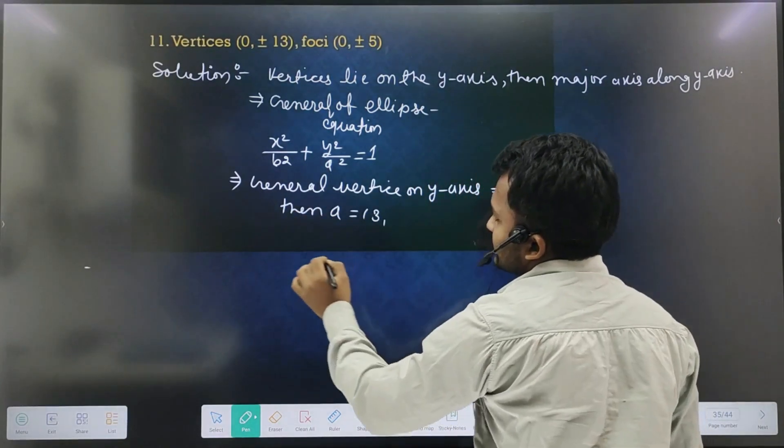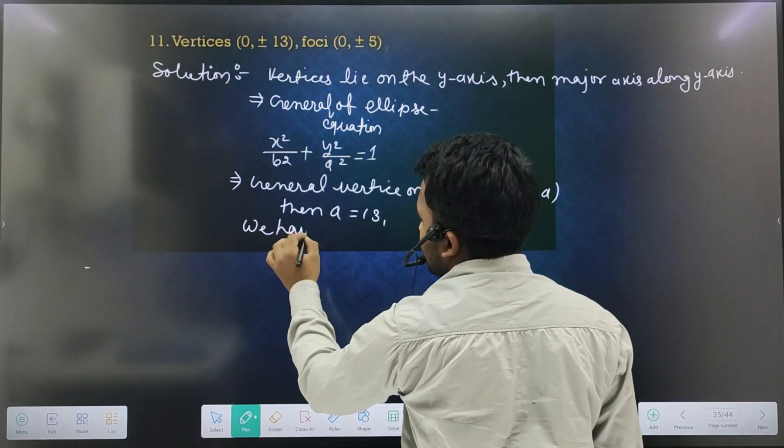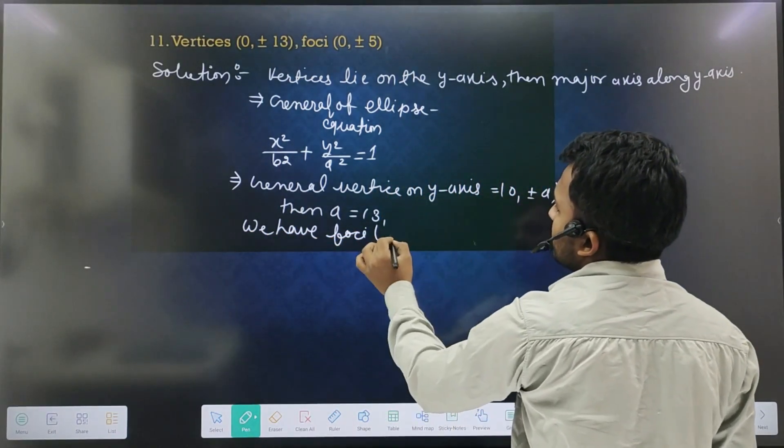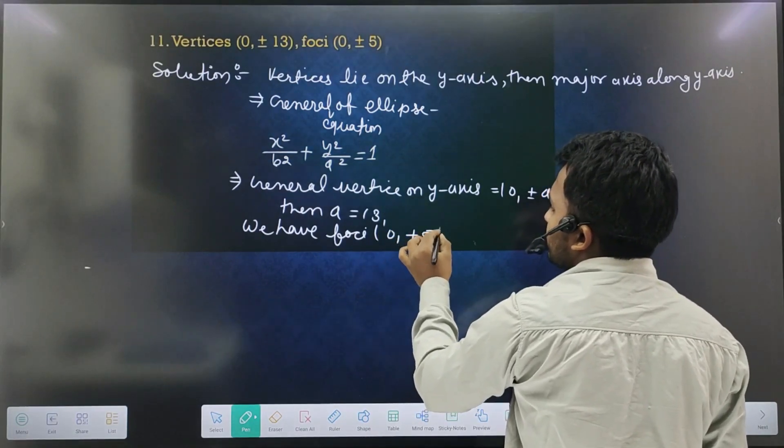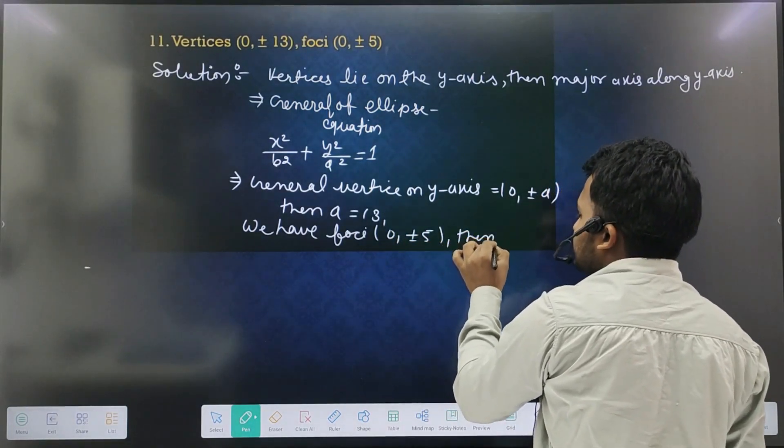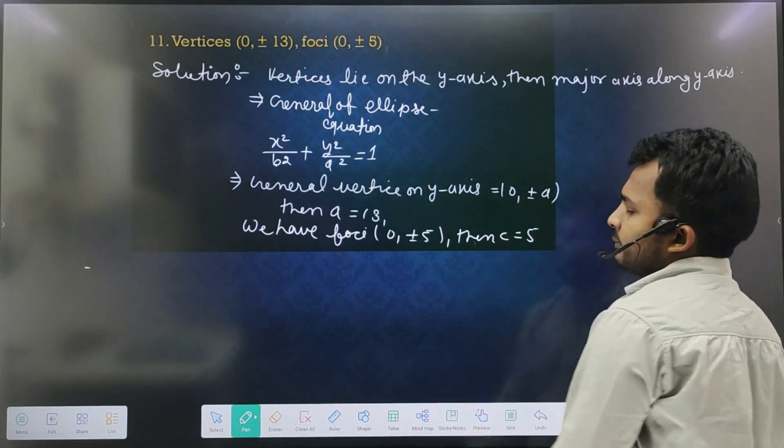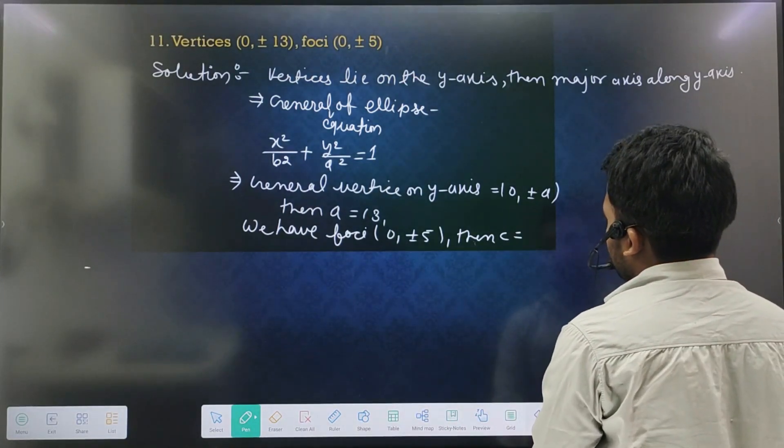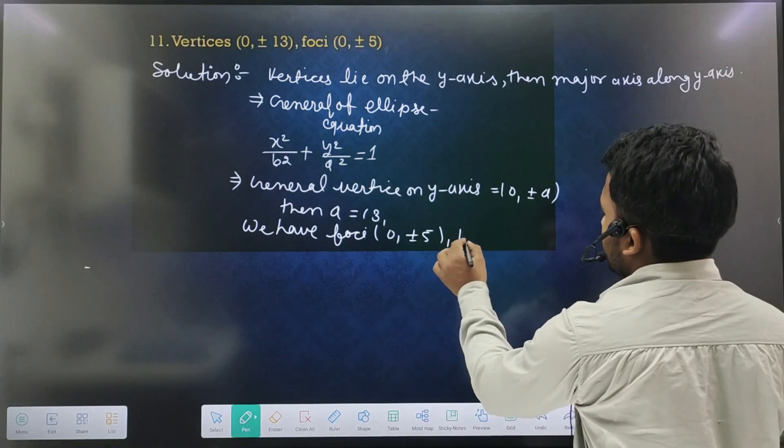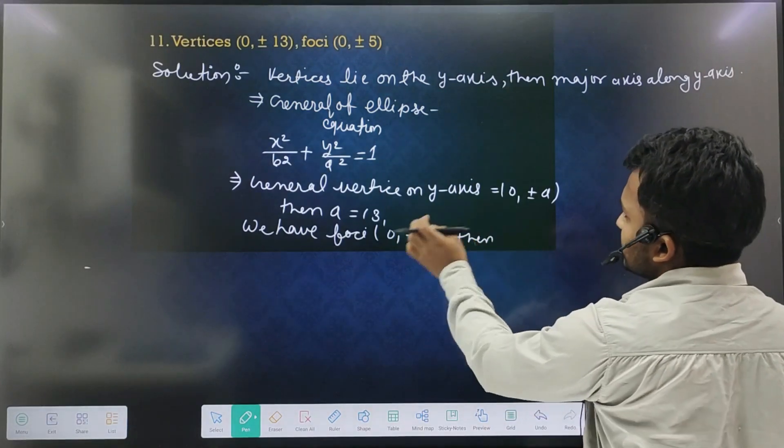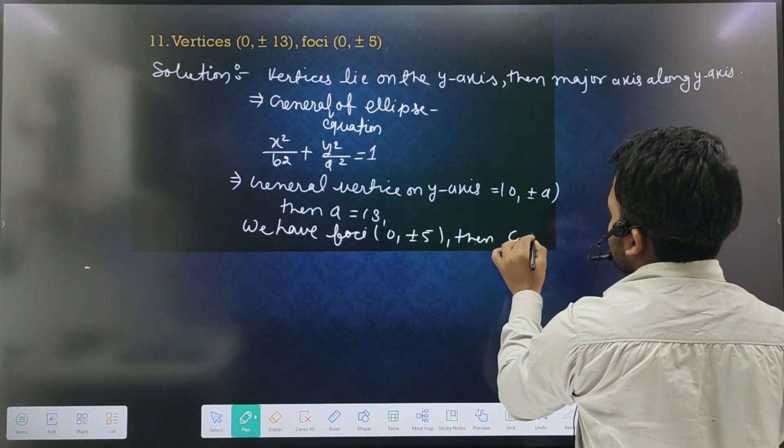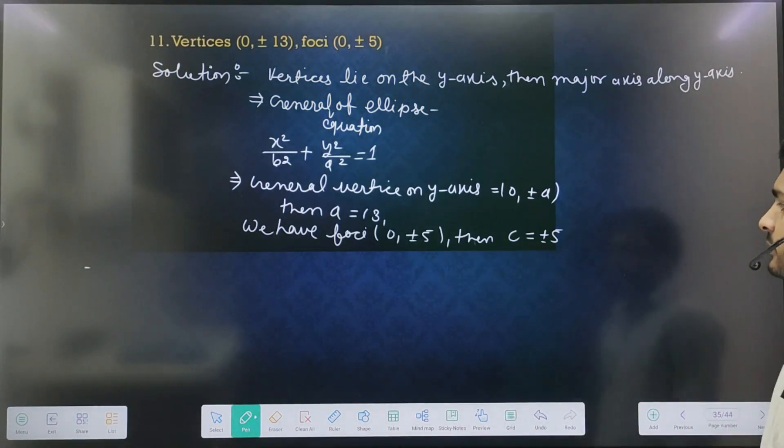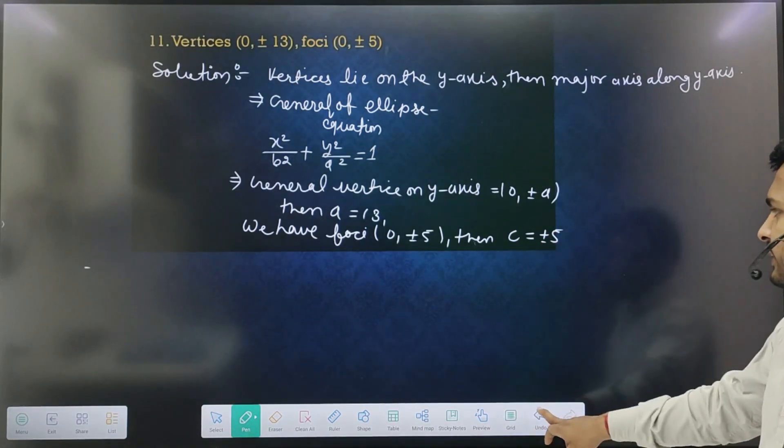Now here we have foci at (0, ±5). Then c equal to 5.